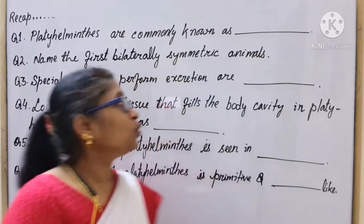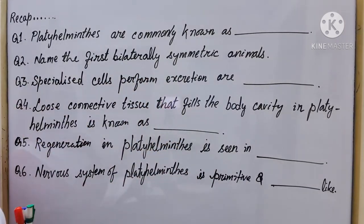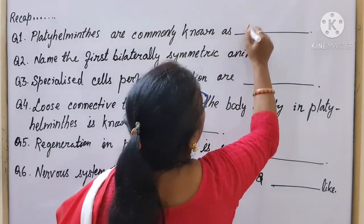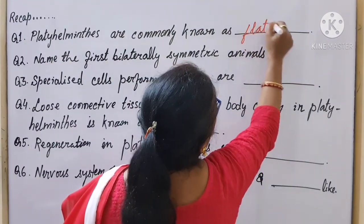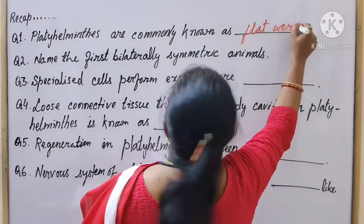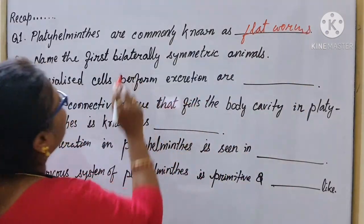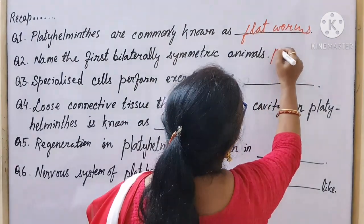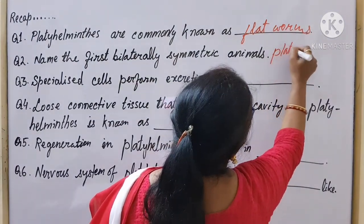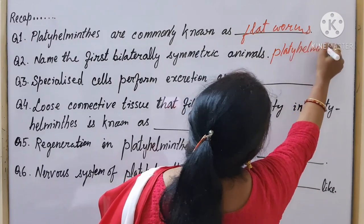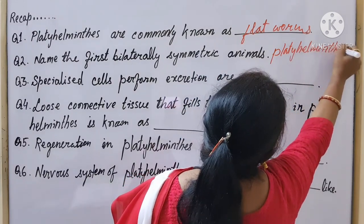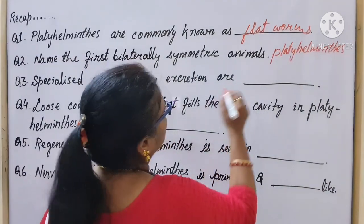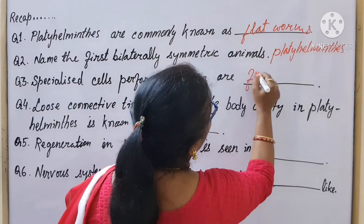Let us discuss a few questions. Platyhelminthes are commonly known as flat worms. Name the first bilaterally symmetrical animals — the answer is Platyhelminthes. Specialized cells that perform excretion are the flame cells.